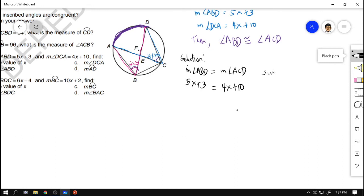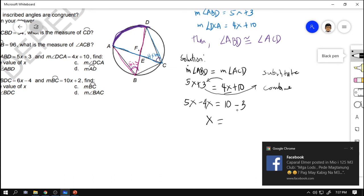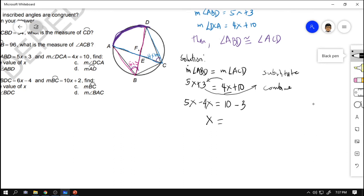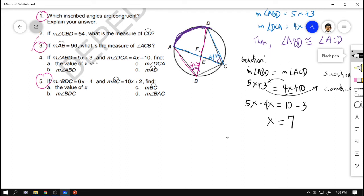Next, after substituting, you have to combine like terms. Si 5X, like term is 4X. But 4X will go to the other side, so it will become negative 4X, and then 10 will remain here. Si 3 will go to the other side and become negative 3. So 5X minus 4X is X, is equal to 10 minus 3. 10 minus 3 is 7. Therefore, X is equal to 7. So X here is 7.